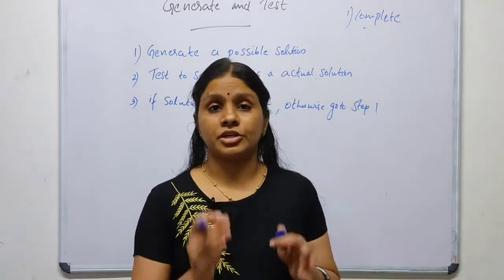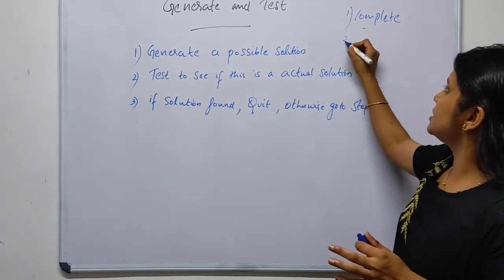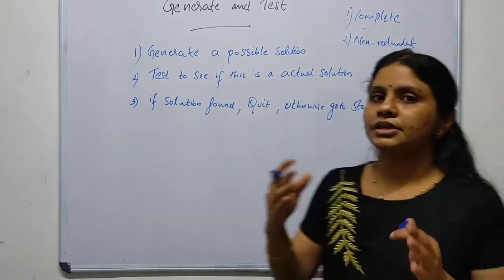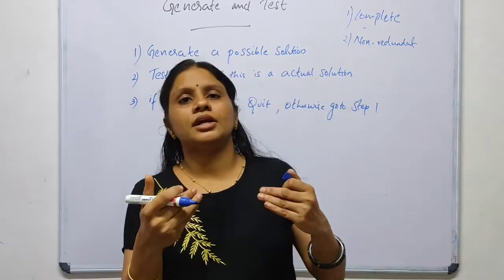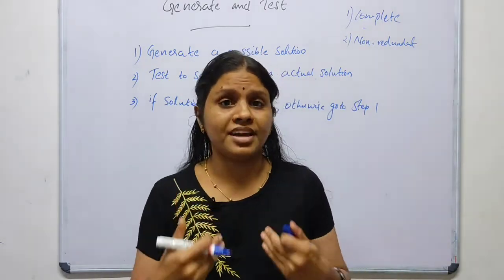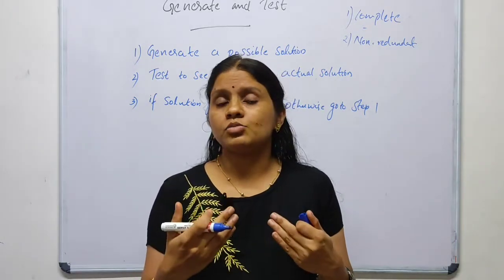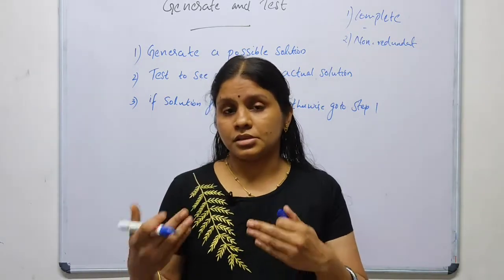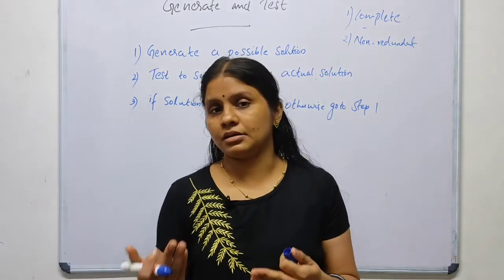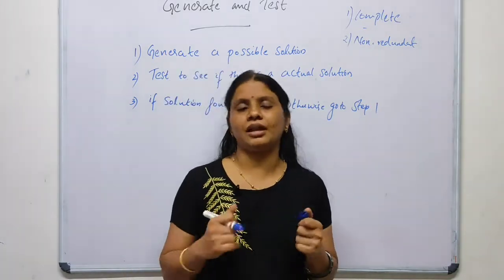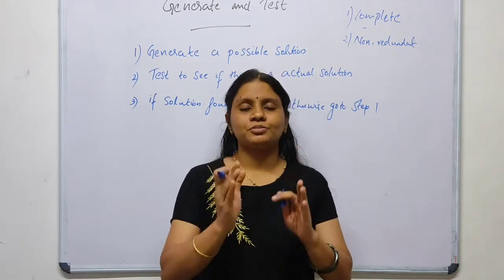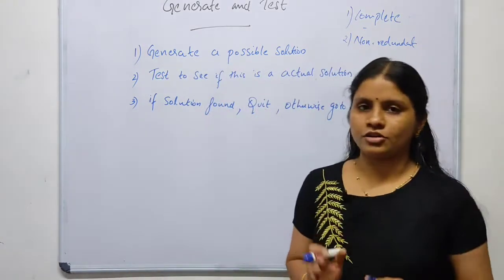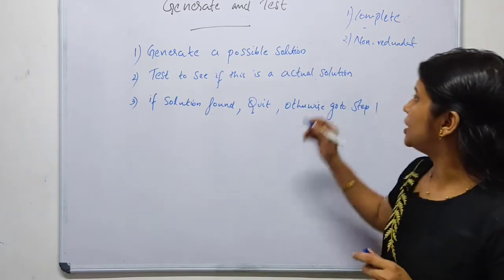The second property is that the generator should be non-redundant. Non-redundant means the generator should not provide duplicate solutions, because if it does, the search time will increase, thereby reducing the efficiency of the algorithm.